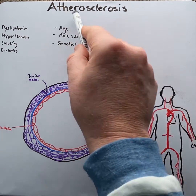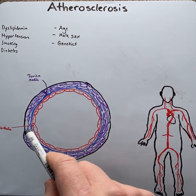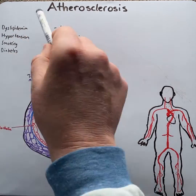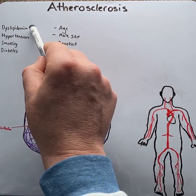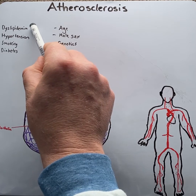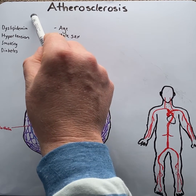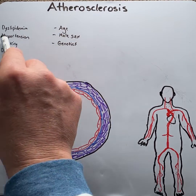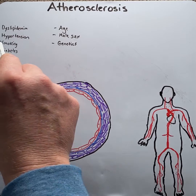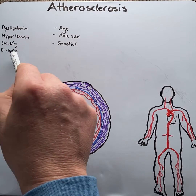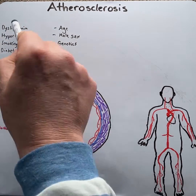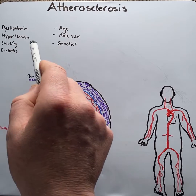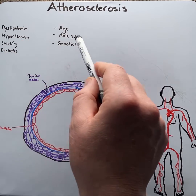The prevalence and severity of atherosclerosis has been correlated by a number of risk factors. These are dyslipidemia, which means an increased bad fat and decreased good fat in the blood, hypertension, smoking, and diabetes. These risk factors are what we call modifiable because they could be reduced or mitigated.